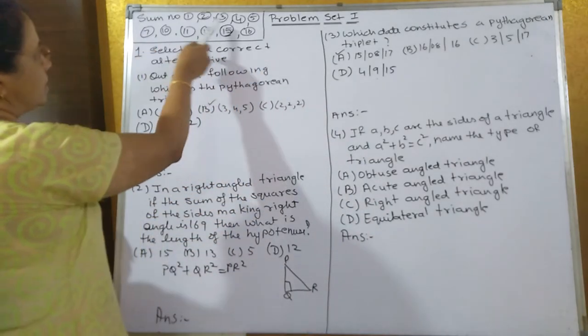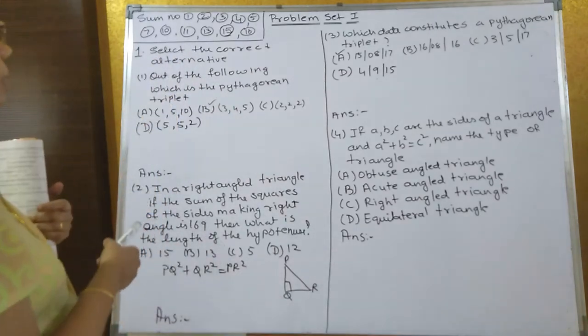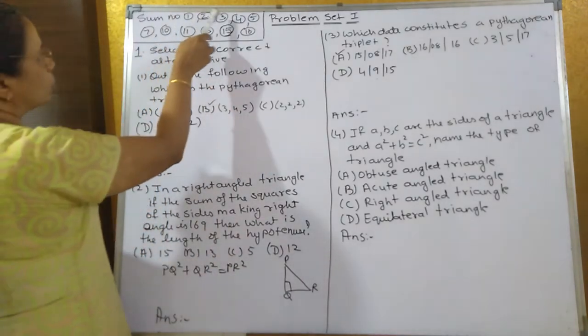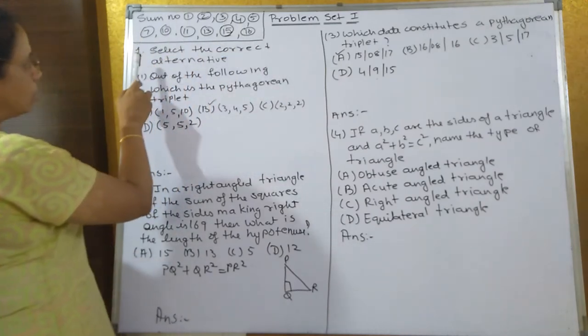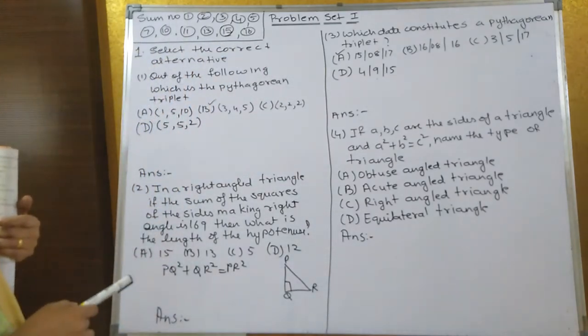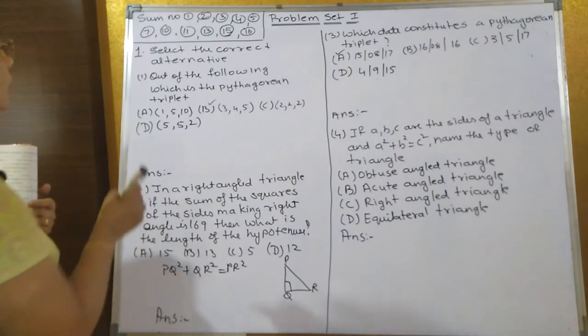Problem Set 1 - all these sums are related to Practice Set 2.1, that is questions 1, 2, 3, 4, 5, 7, 10, 11, 13, 15, and 16. Now the first one is an MCQ. Select the correct alternative. Out of the following, which is the Pythagorean triplet?